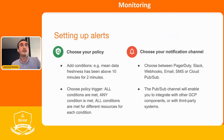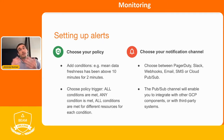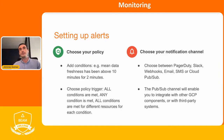To finish the slides section, it's very important to set up alerts. When you set up alerts, you do two things: you choose your policy — for example, the mean data freshness has been above 10 minutes for two minutes — and you choose a policy trigger like all conditions are met or any condition is met. Then you choose your notification channel: email, Slack, webhooks, or also PubSub. Sending alerts to PubSub is useful if you want to integrate with other systems — GCP components or third-party or on-premise alerting systems.